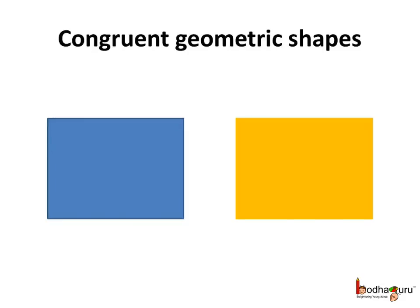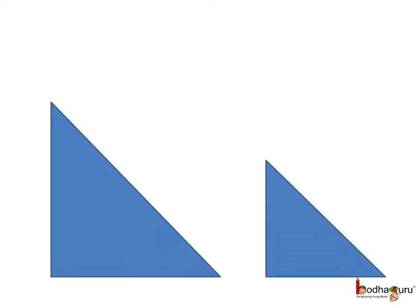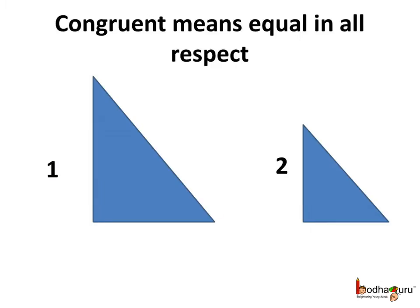Even geometric shapes can be congruent, like these two quadrilaterals — four-sided closed figures — which look identical. Here these two triangles also look similar. But does looking similar mean they are congruent? Congruent means equal in all respects. So if two triangles are congruent, all their sides and angles must be the same. Here triangle 1 and triangle 2 look the same, but the second triangle is smaller — its sides are of lesser length. So these triangles are not congruent.